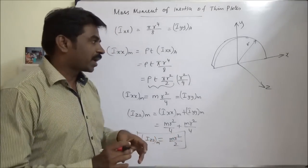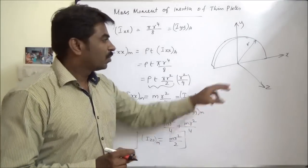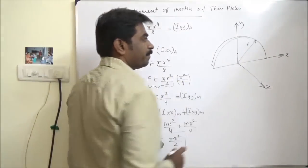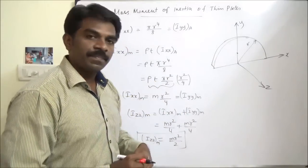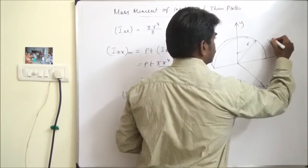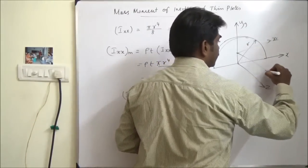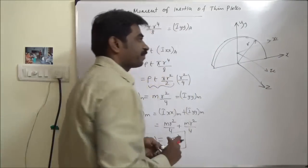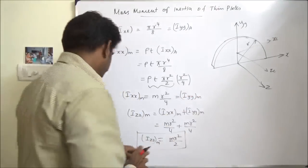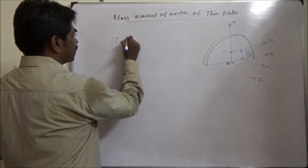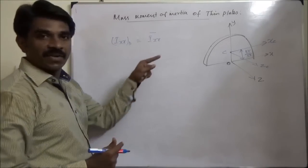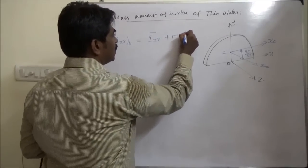Now, if we shift this axis to the centroidal axis — that is, if we need to find the mass moment of inertia about the axis passing through the centroid (xc, yc, and zz) — we need to use the parallel axis theorem. So Ixx_base equals Ixx_centroid plus m·d².